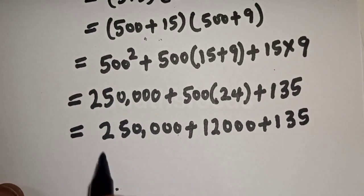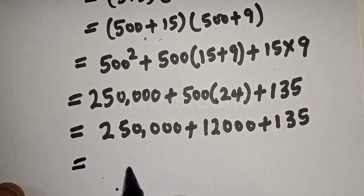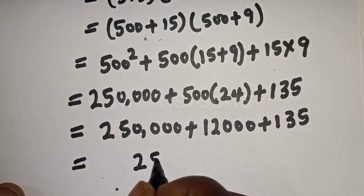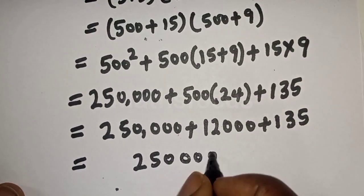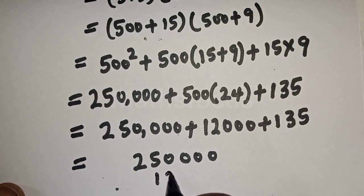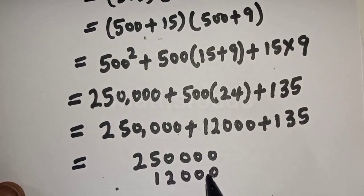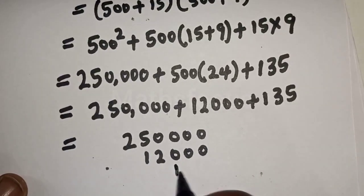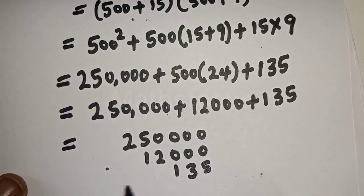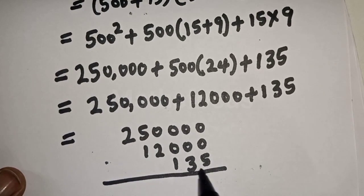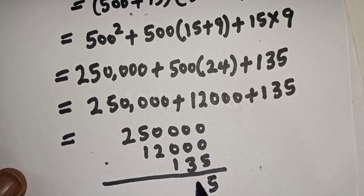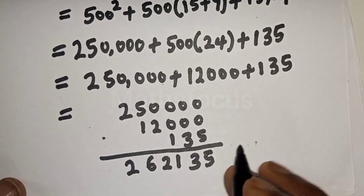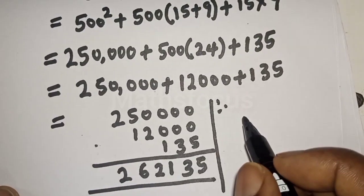Now let's add everything together. We have 250,000, then here is 12,000, and here is 135. We have 5, 3, 1, 2, 6, 2.